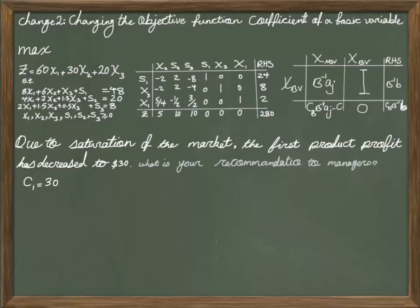The best practice is to see in what range our coefficients here in the row of z remain positive. Because if you remember, for the maximization, we said we are remaining in the optimal table when all the coefficients in the row of z are positive or zero.